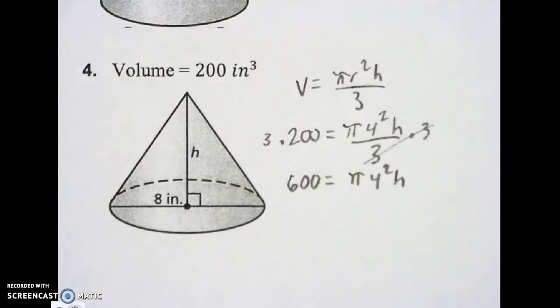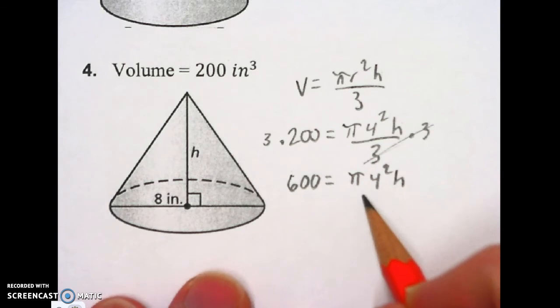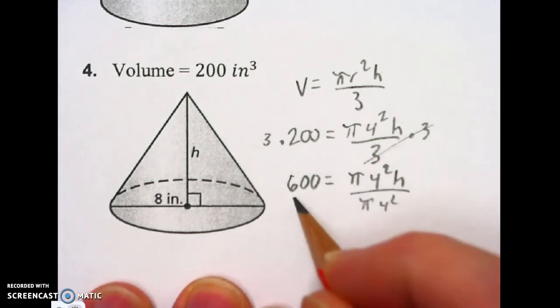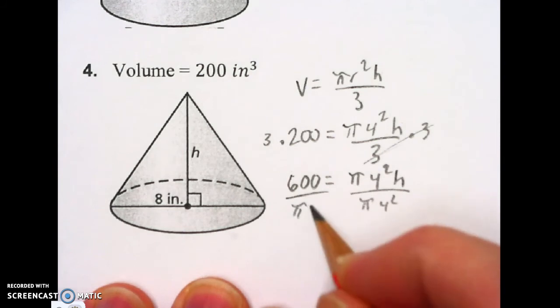All right. Last step, I need to divide off the pi and the four squared that's being multiplied by the H. So I'm going to divide off pi and four squared. On the other side, pi and four squared.